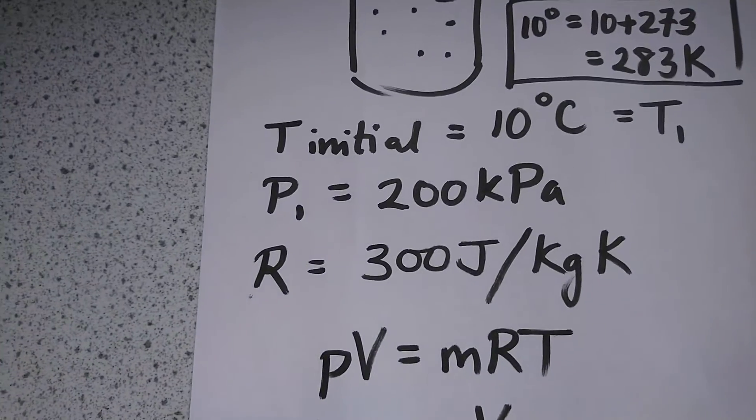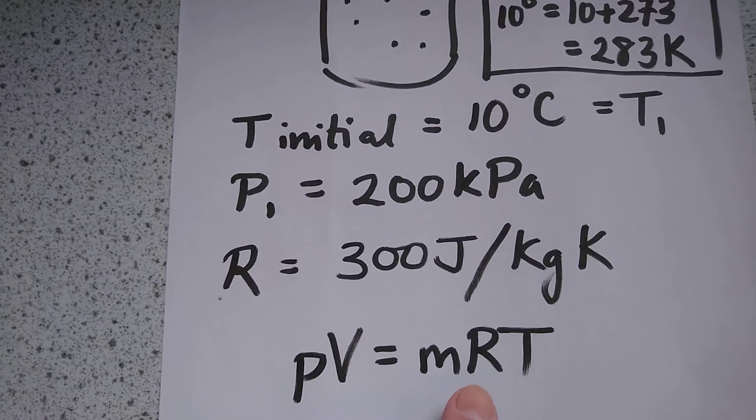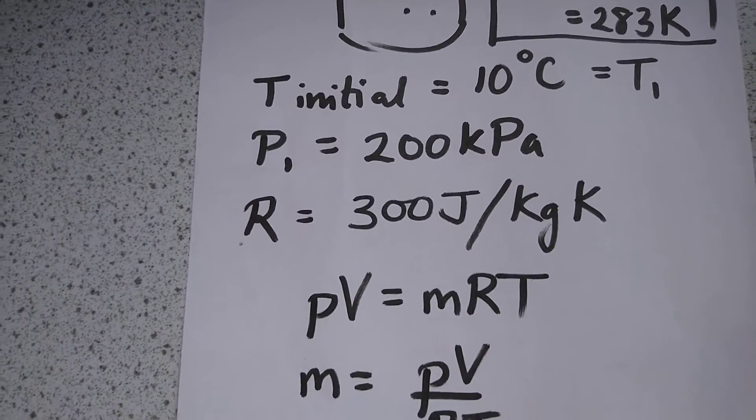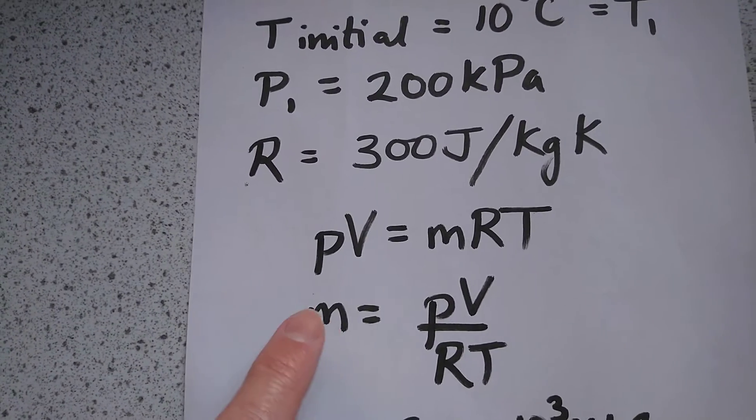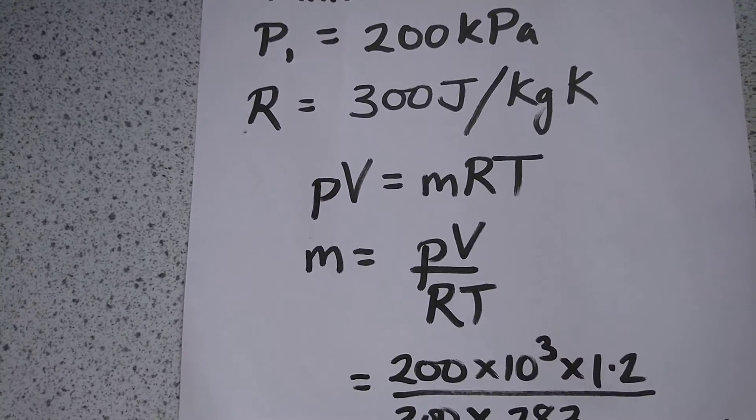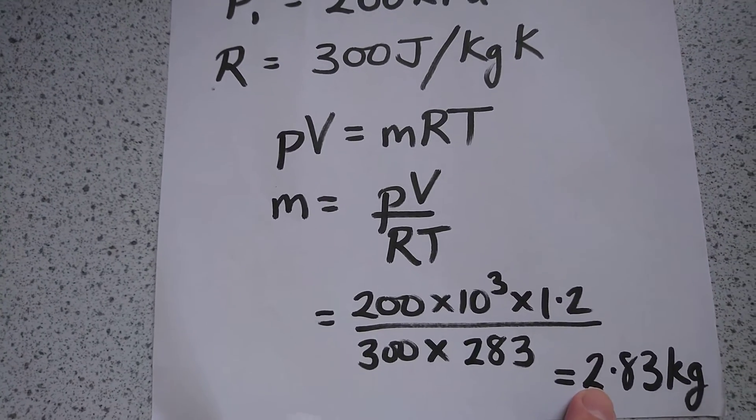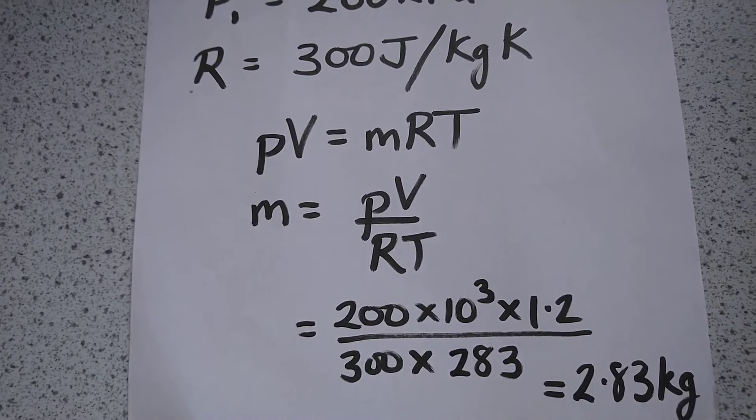PV equals MRT. We rearrange that to get the mass, pop the numbers into the formula, and that gives us a final answer of 2.83 kilograms.